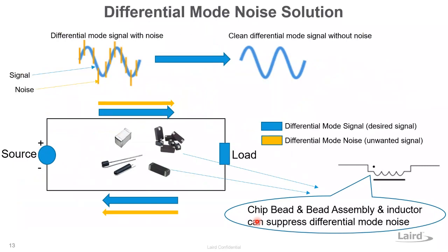Another basic model expresses differential mode suppression. Applying a chip bead or bead assembly will block or absorb the differential mode noise — shown in orange — while passing through the blue signal, which is the normal differential mode signal, without attenuation.